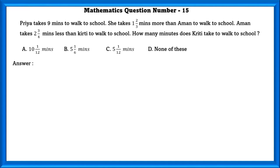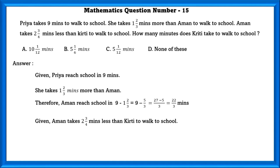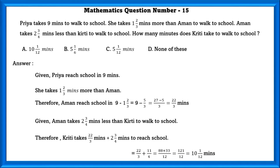Mathematics question number 15. Priya takes 9 minutes to walk to school. She takes 1 and 2/3 minutes more than Aman. Therefore, Aman reaches school in 9 minus 1 and 2/3 minutes, that is 22/3 minutes. Aman takes 2 and 3/4 minutes less than Kirti. Therefore, Kirti takes 22/3 plus 2 and 3/4 minutes to reach school, that is 10 and 1/12 minutes.